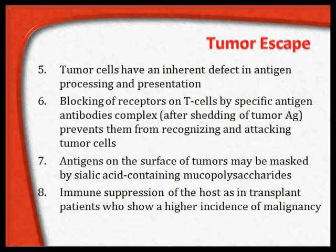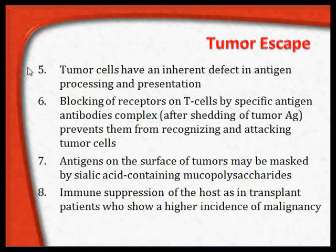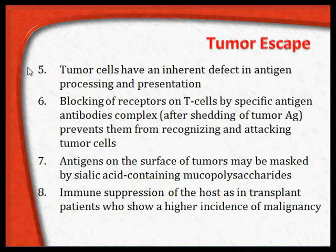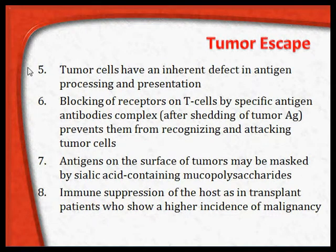Continuing with tumor escape: tumor cells have an inherent defect in antigen processing and presentation. For any antigen to be recognized, it must be processed and presented to the immunocytes, which then destroy the tumor cell through T cells or B cells. But if the tumor cells have defective antigen presentation and processing, the immune system will not be able to recognize them.